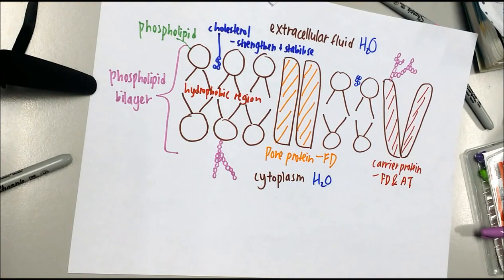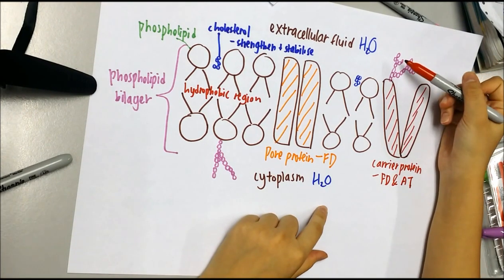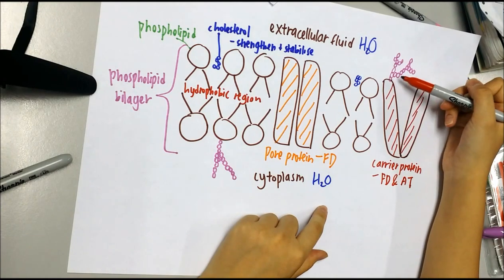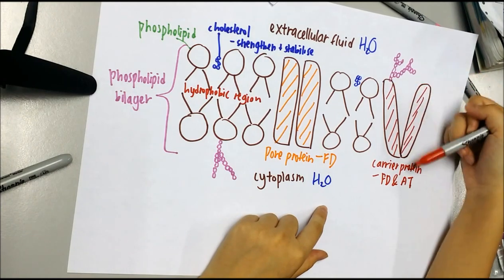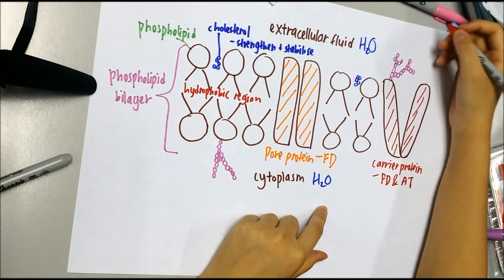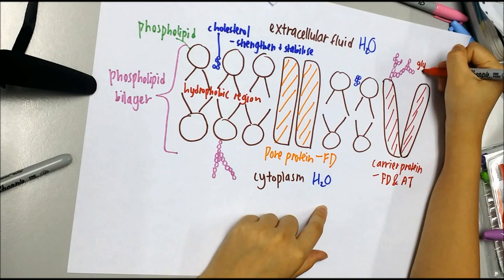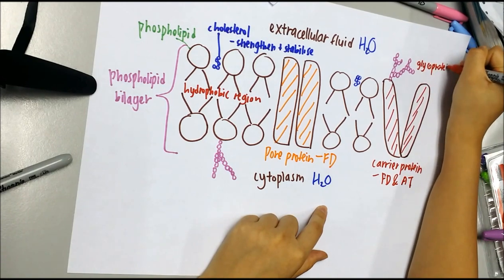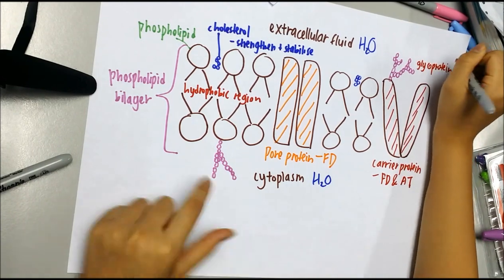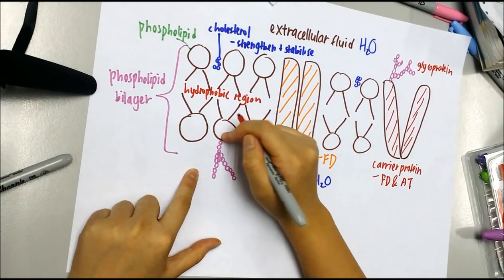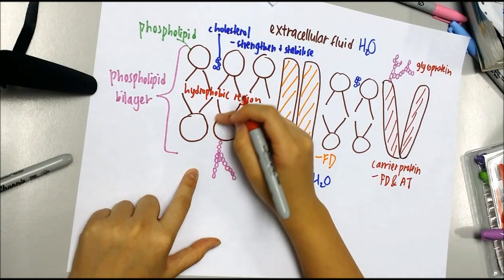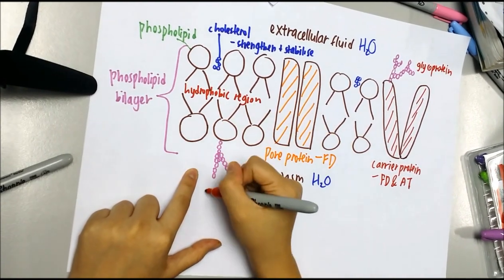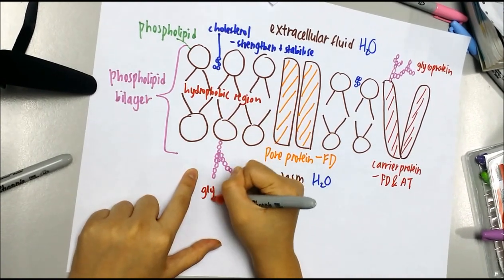If a carbohydrate molecule is attached to a protein, it is known as glycoprotein. But if the carbohydrate is attached to the phospholipids, it is known as glycolipid.